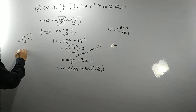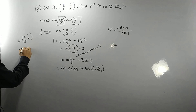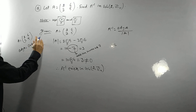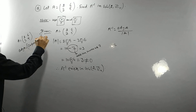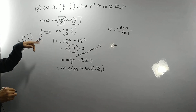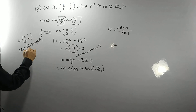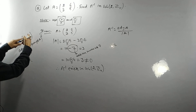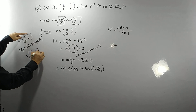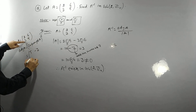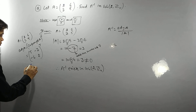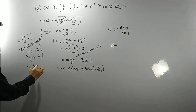For the adjoint matrix, we find the cofactor matrix and then take its transpose. The cofactor of 2 is 5 (plus sign), the cofactor of 6 is −3 (minus sign), the cofactor of 3 is −6 (minus sign), and the cofactor of 5 is 2 (plus sign). Taking the transpose gives us [[5, −3], [−6, 2]].